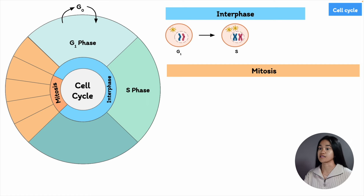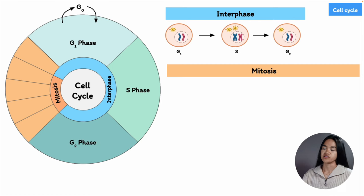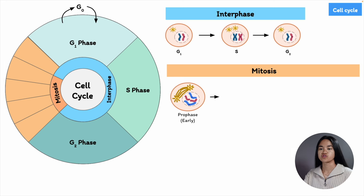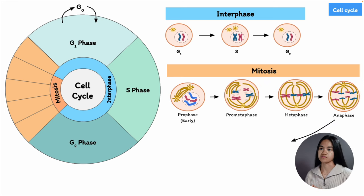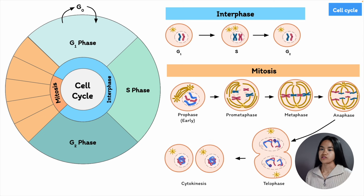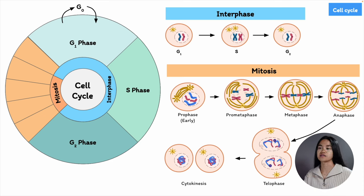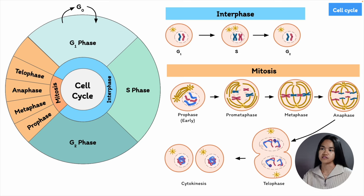The cell then enters the S phase where DNA synthesis occurs. The cell duplicates its DNA, and then prepares for mitosis through the G2 phase. Moving on to the M phase, this is where the cell distributes the two copies to opposite ends and divides its cytoplasm, forming two new cells. It's comprised of mitosis, in which the cell's nucleus divides, and cytokinesis, in which the cell's cytoplasm divides to form two daughter cells. Mitosis is further divided into prophase, metaphase, anaphase, and telophase.